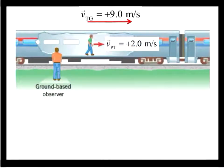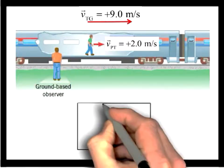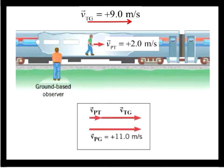On the train is a passenger who is walking forward toward the front of the train with a speed of 2 meters per second relative to the train. The ground-based observer would see the passenger moving in the same direction as the train with a speed of 11 meters per second relative to ground due to the passenger's walking velocity and the train velocity adding together.